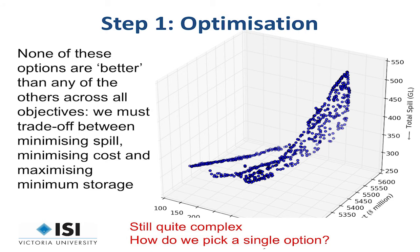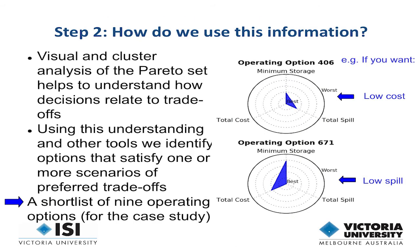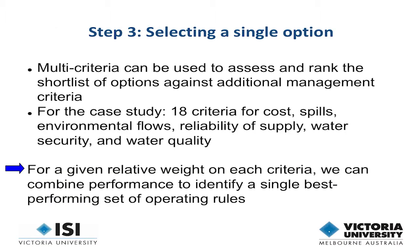The suggestion was to pick a few of the most interesting trade-off points for more detailed analysis. They developed a visualisation technique where, if you had an absolute optimum, it would be a single dot in the middle — but you never get that. Instead, you look at how each point varies from the best condition for minimum storage, total cost, and total spill. For example, here you have a low-spill scenario, here a low-cost scenario, and you can rank those using a multi-criteria analysis approach to select your best set of operating rules.